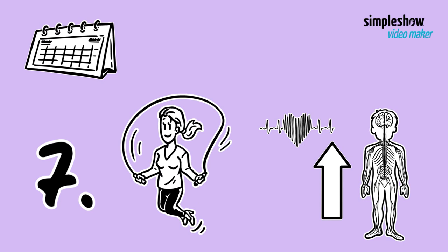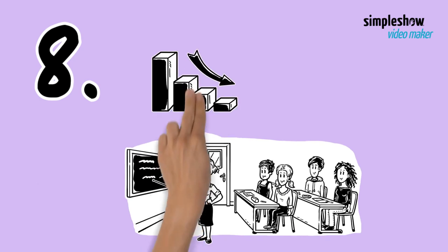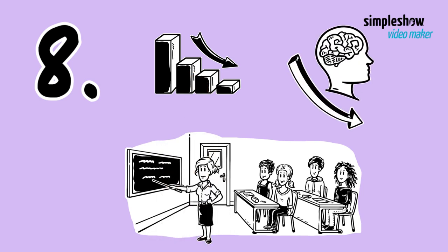Eight: take a class in a subject area that interests you because formal education can help reduce risk of cognitive decline and dementia.